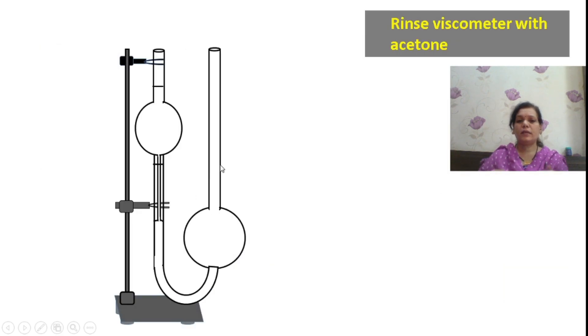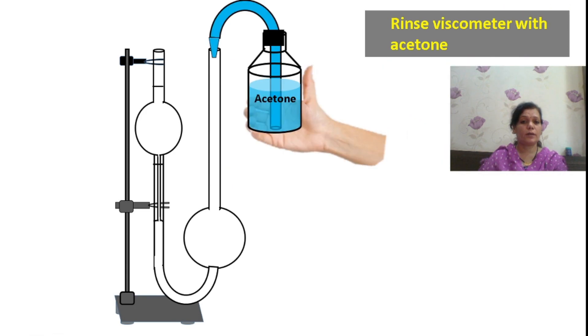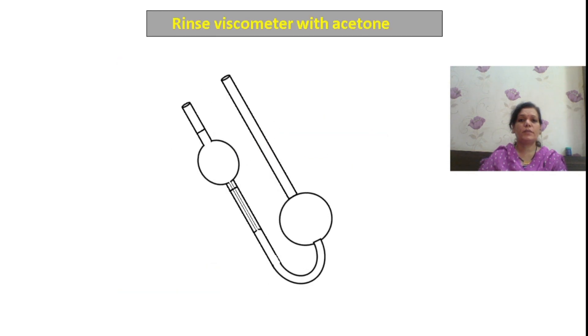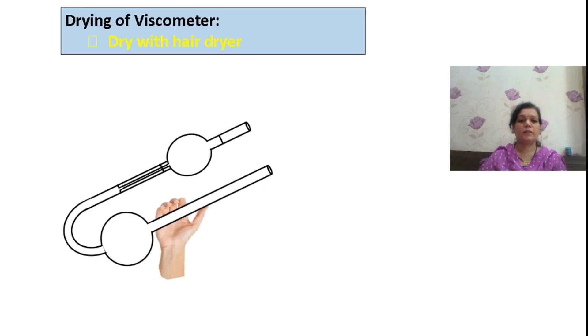You have to take care that you are rinsing the viscometer, cleaning the viscometer with acetone, an organic solvent, highly volatile. You will rinse the viscometer, tilt it, dry it with hair dryer.